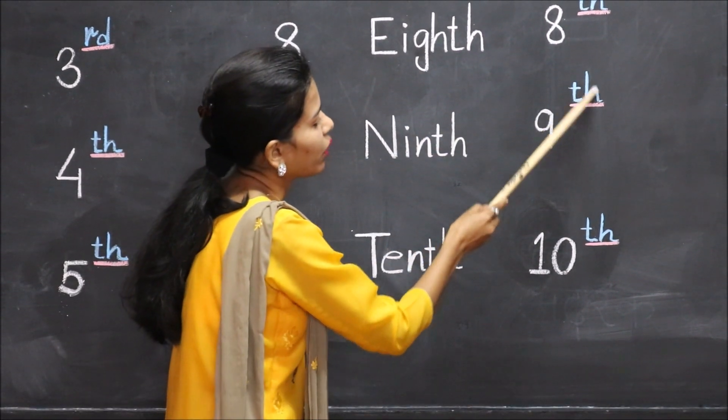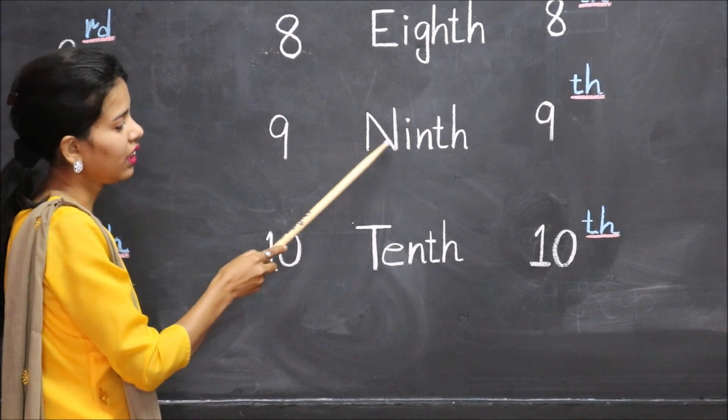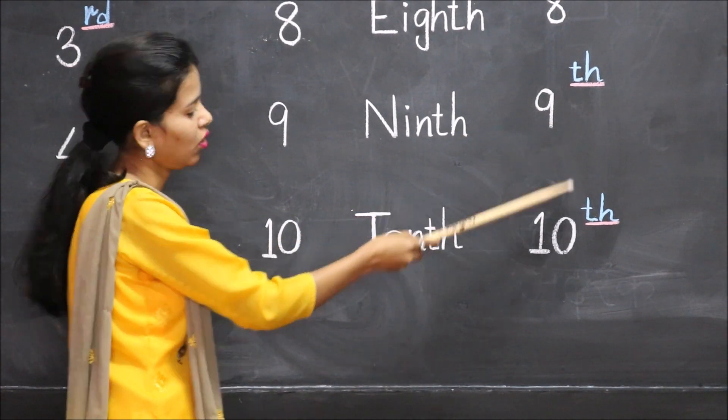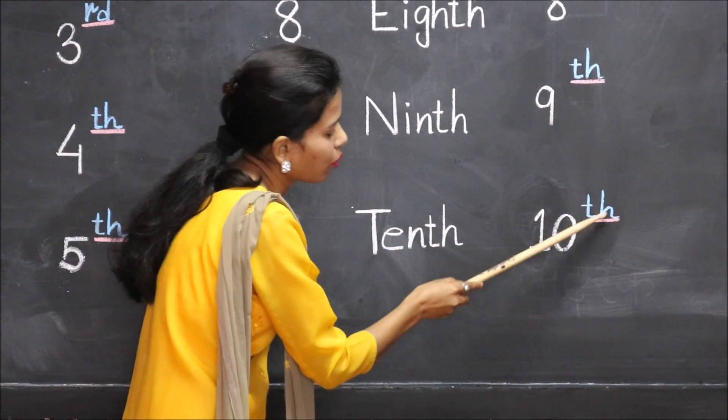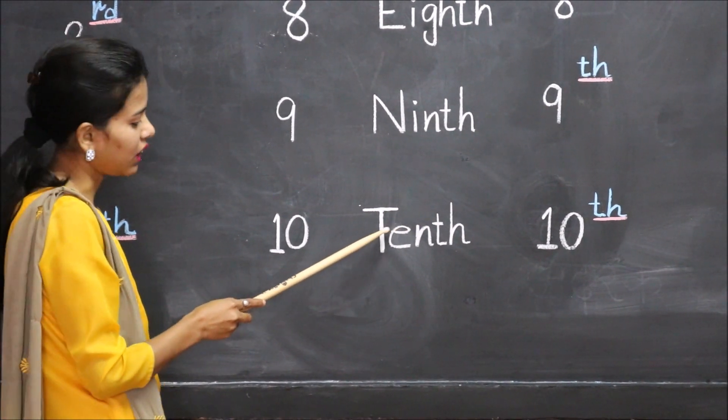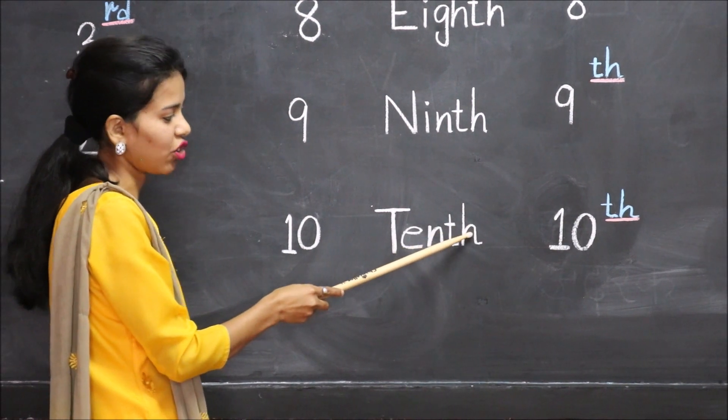Eighth. When we add 'th' with nine, it becomes ninth. N-I-N-T-H. Ninth. When we add 'th' with ten, it becomes tenth. T-E-N-T-H.